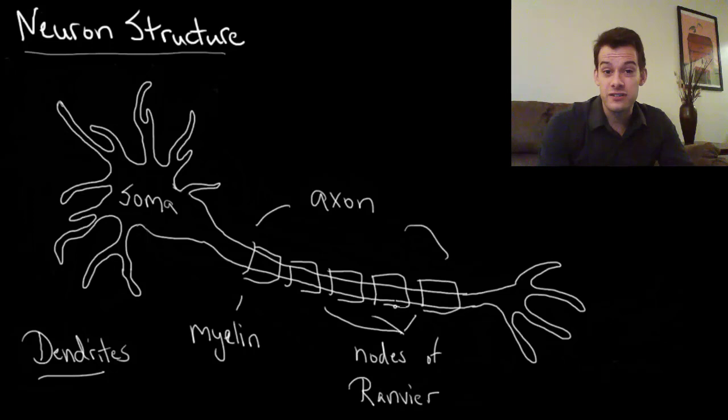And essentially what the nodes of Ranvier do is they allow for what's called saltatory conduction. And this is the idea that comes from the Latin for saltare, to jump. And what happens is the message can jump across these nodes rather than traveling all the way across the full length of the axon.